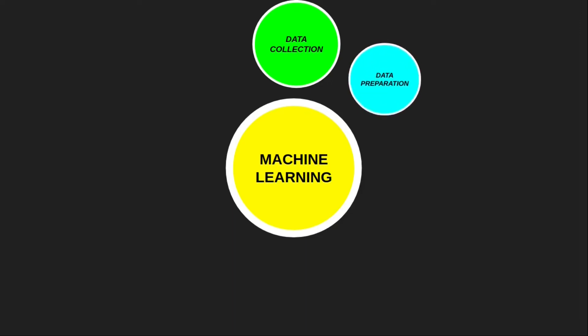The second step in the machine learning project development lifecycle is data preparation. After collecting the data, we need to prepare it for further steps. Mostly the collected data will be in unstructured format, so in this data preparation step we make that unstructured data into structured data suitable for the next steps of the life cycle. First, we put all data together from the various sources we have collected and combine it into a single dataset.